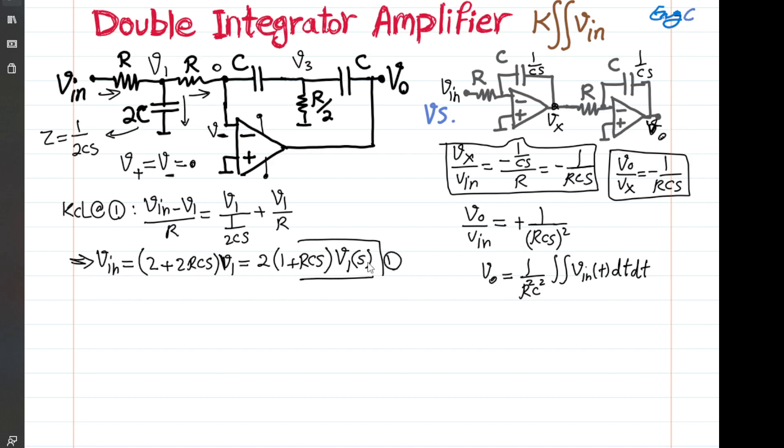Now, let's write the KCL at the negative input terminal of the op-amp, the terminal that has a voltage zero. You can see that the current that is coming in cannot go through the negative input terminal of the op-amp because this is an ideal op-amp with infinite input impedance.